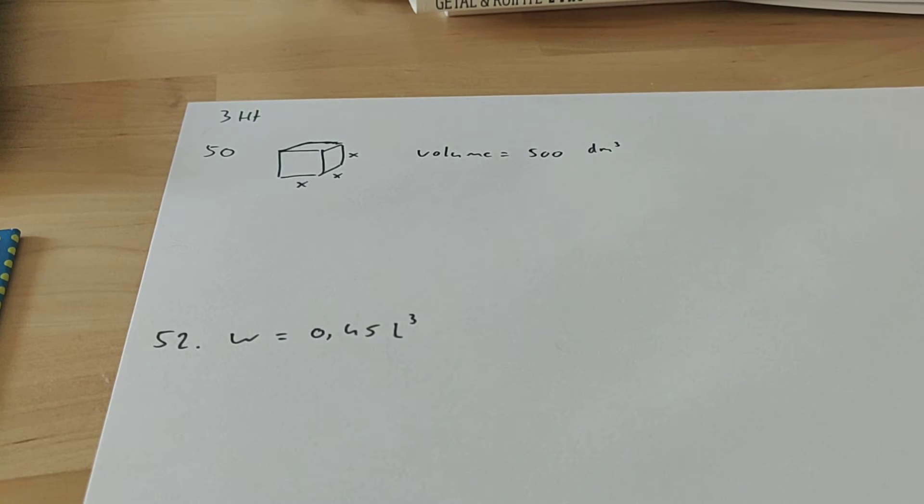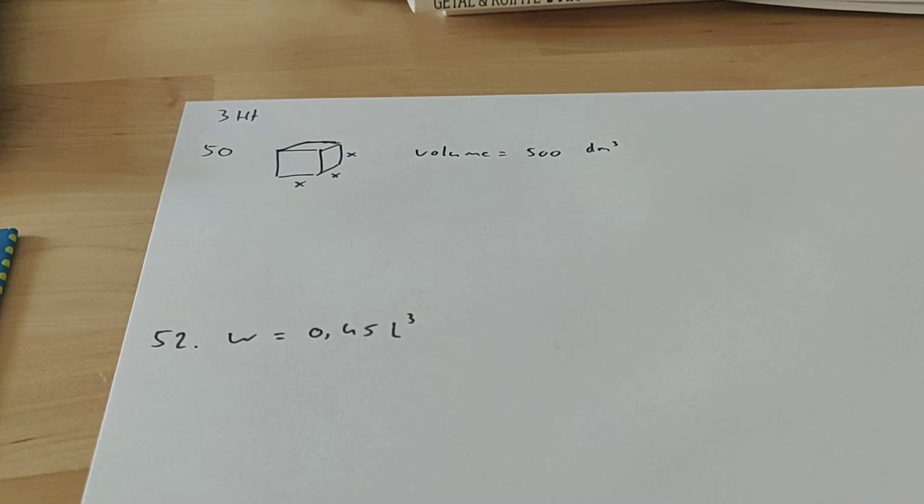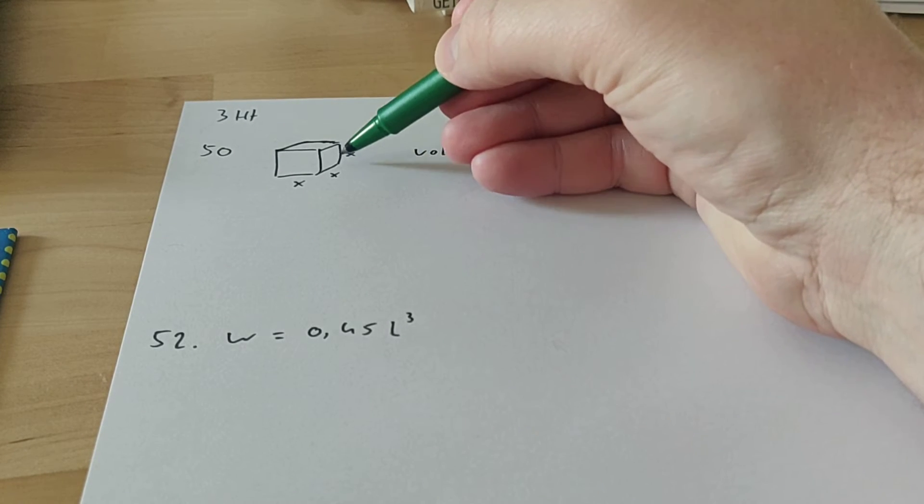The volume is 500 liters, so it's the same as 500 cubic decimeters. Now the question is, calculate the height of the box, so we want to know how high is it.